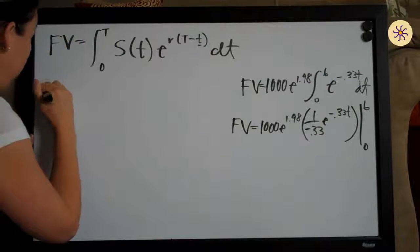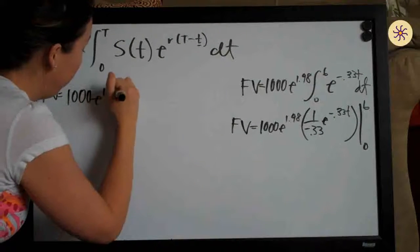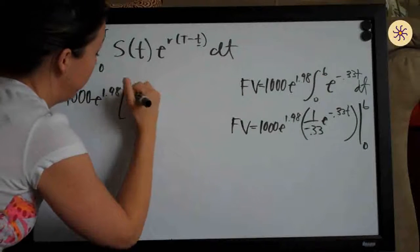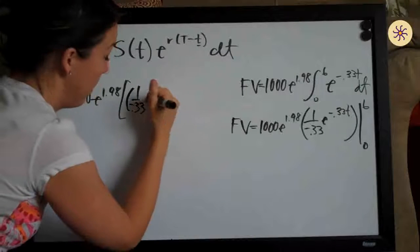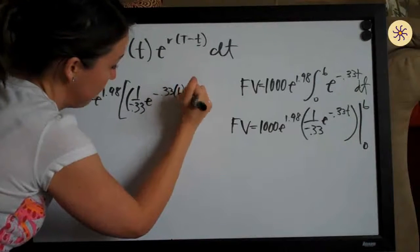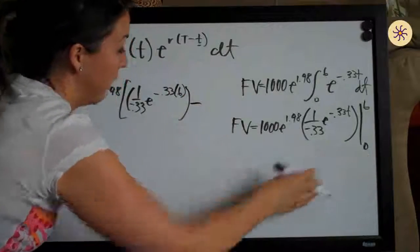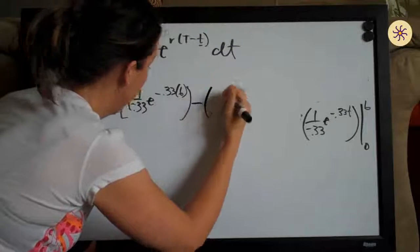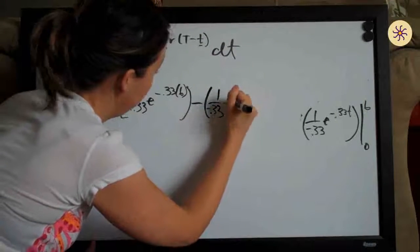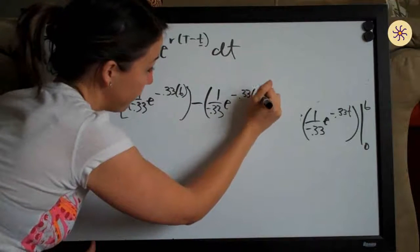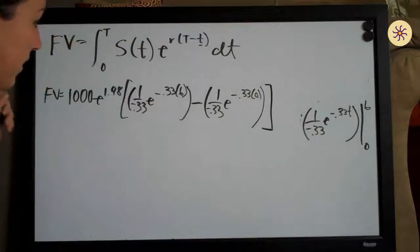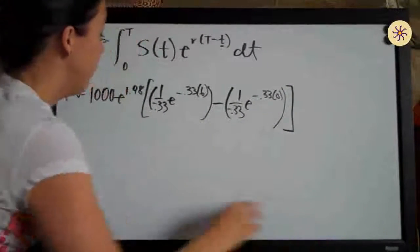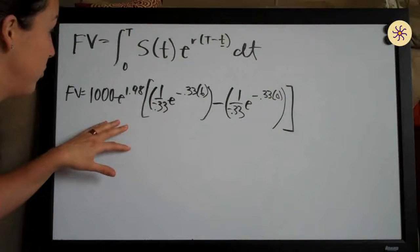So future value equals one thousand e to the one point nine eight. To evaluate from zero to six, we first plug in six: one over negative point three three, times e to the negative point three three times six. Then we subtract and plug in the bottom number, zero: minus one over negative point three three, times e to the negative point three three times zero. It's always the top number first, minus the bottom number, for a definite integral.